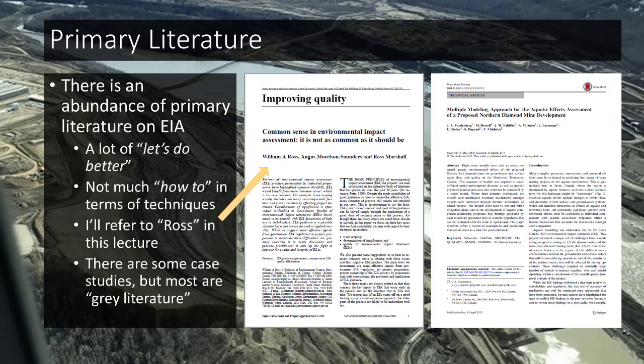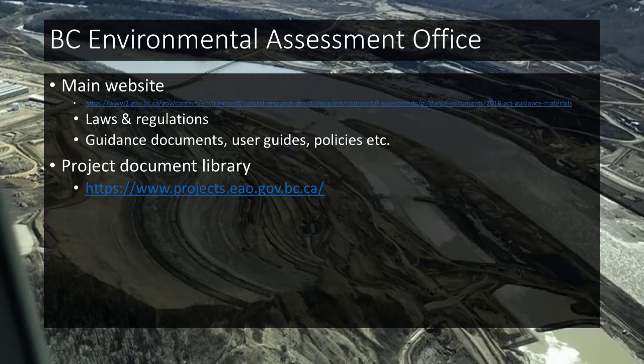Another useful source is case studies. There aren't many published case studies — a lot of EIAs are what's known as grey literature: large volumes of scientific work that haven't gone through formal peer review, though they do go through a separate, rigorous review process. There are many EIAs on the Canadian Environmental Assessment Agency website and the BC Environmental Assessment Office website, and looking at these will help with your assignment.